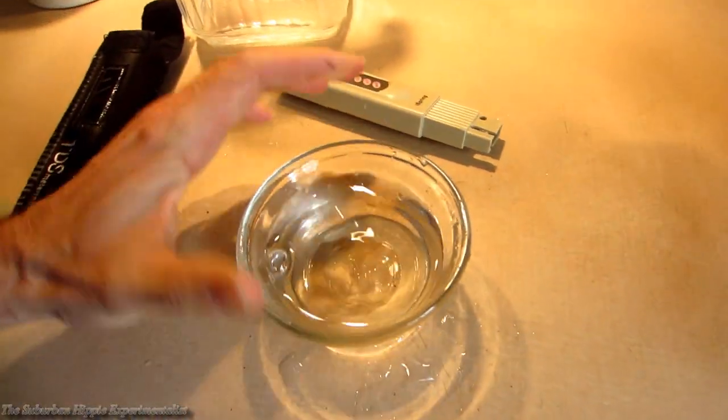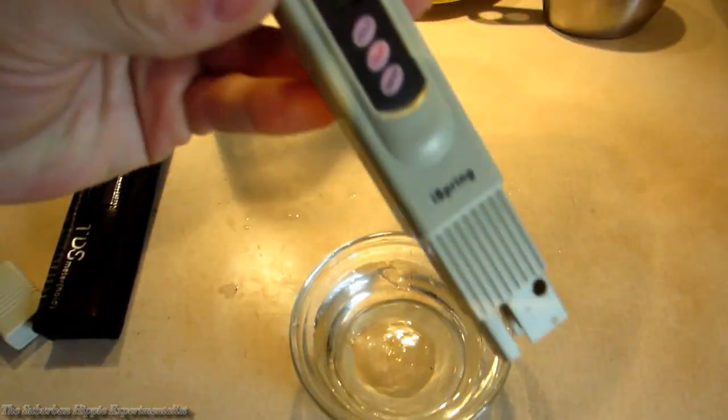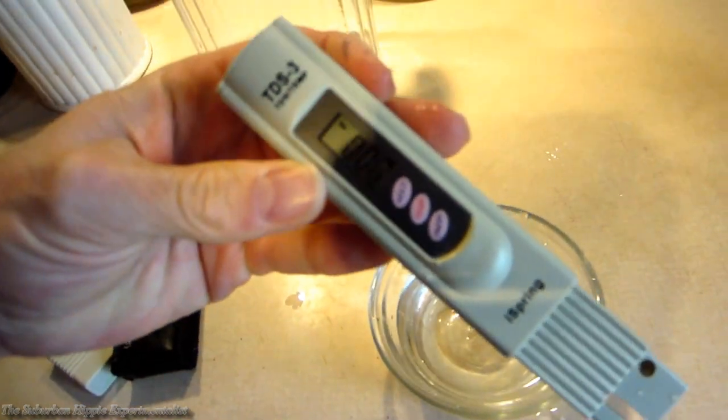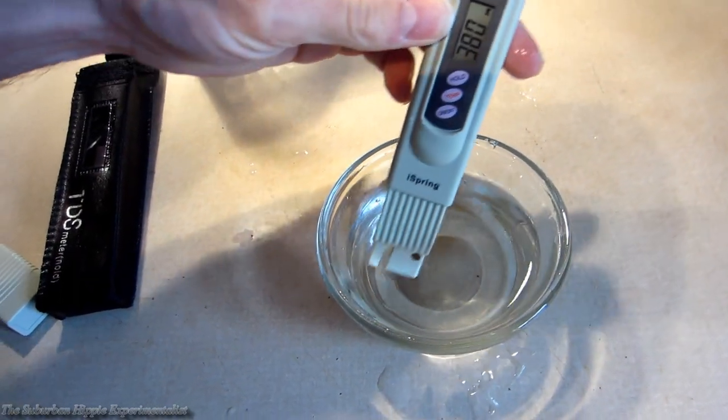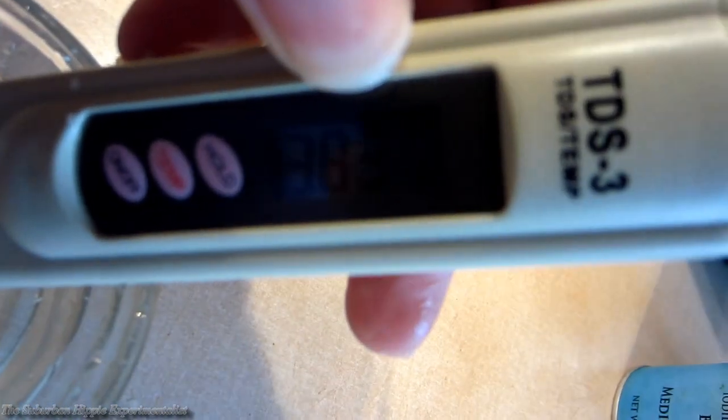So now we're going to put some tap water in here. Okay, let's measure that. See what it is. Now this meter that I'm using has automatic adjustment with temperature. And that says 383. That's right from the tap. That's quite a difference.